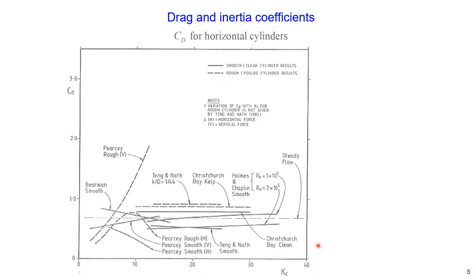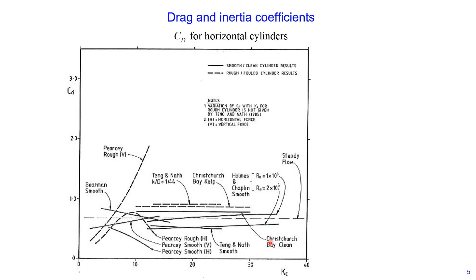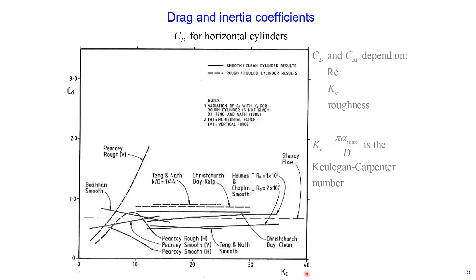There are different diagrams that an engineer can use to determine drag and inertia coefficients. On this slide, I show a diagram used to determine drag coefficient for horizontal cylinders. From this diagram, the drag coefficient depends on the Keulegan-Carpenter number, Reynolds number — because different lines represent different values of Reynolds number — and also roughness, because different lines represent different roughness values.